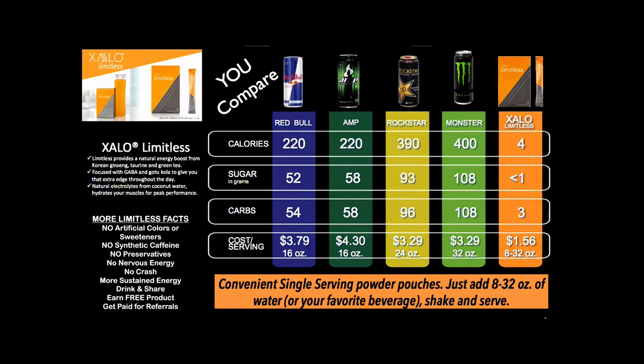We spend time educating, especially the MB30 generation who are using these products. We teach them to be label readers — to look at how many servings are in the can. A 32-ounce Monster says only 100 calories per serving, but there are four servings in the can, so they're actually getting 400 calories and 108 grams of sugar. We talk about sugar, addiction, the health challenges, and the alternative: a four-calorie product with less than a gram of sugar.